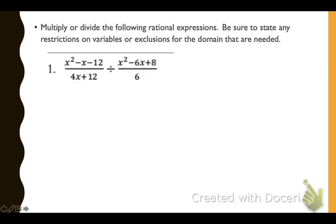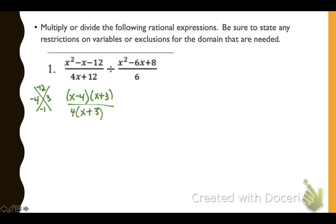The first thing we need to do is factor all the numerators and denominators. Factoring the first numerator: the two numbers that multiply to give us negative 12 and add to give us negative 1 are negative 4 and 3. Since our a value is 1, we can write those as our factors. In the denominator, we factor out a 4 as the greatest common factor.